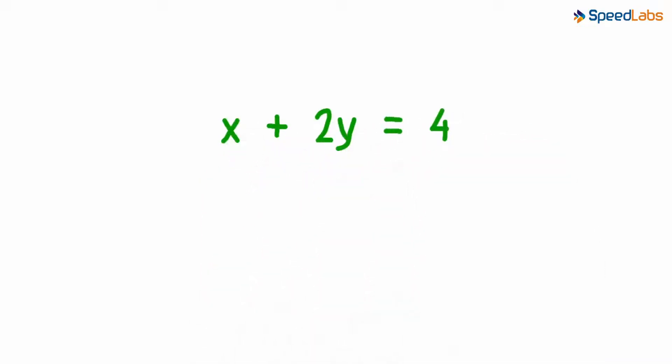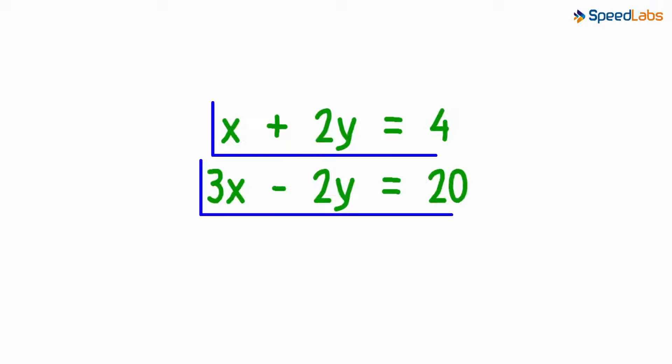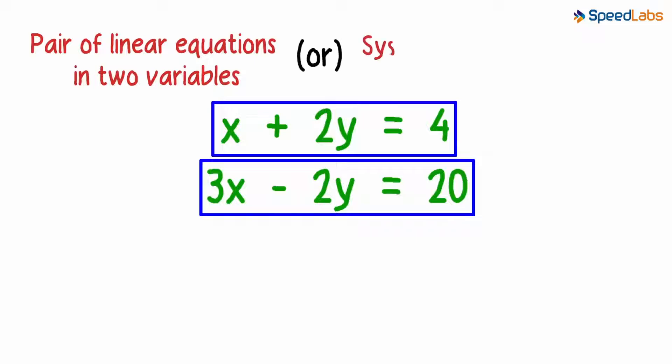x plus 2y equals 4 and 3x minus 2y equals 20. Each one of these is a linear equation in two variables. And can you guess what they'll be called together? Yes, a pair of linear equations in two variables, or a system of linear equations in two variables.